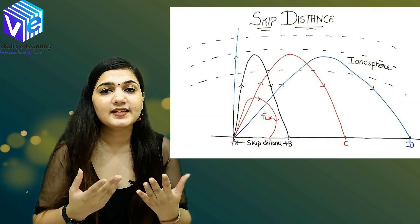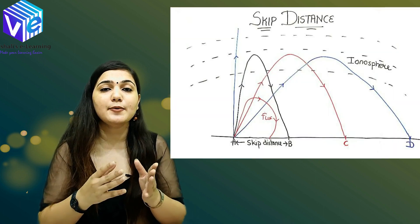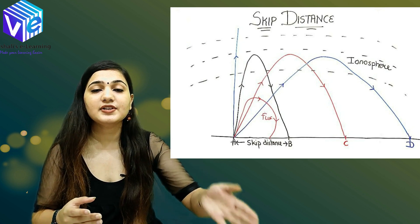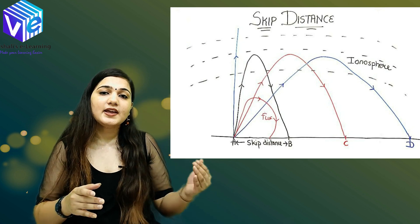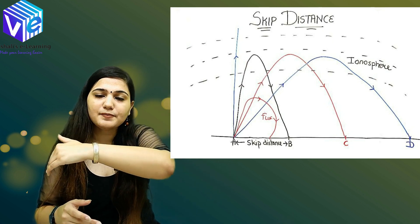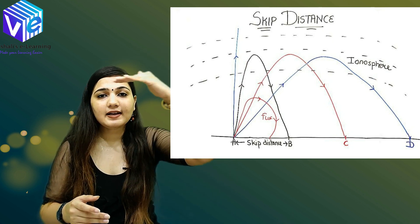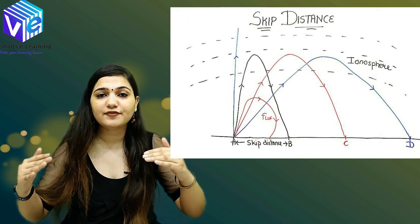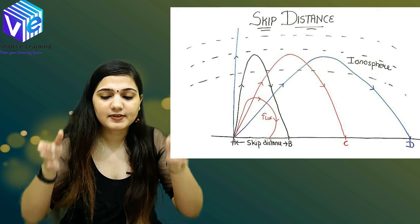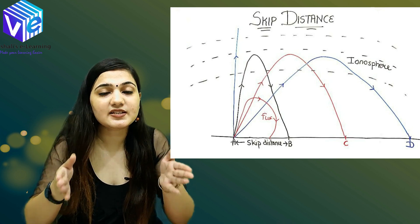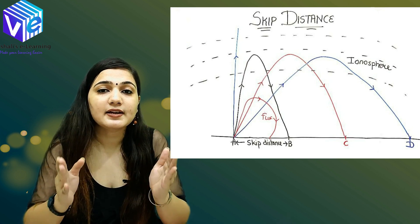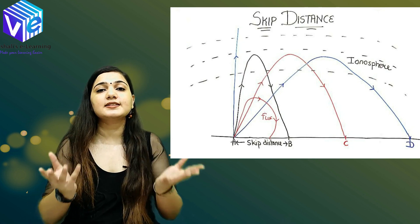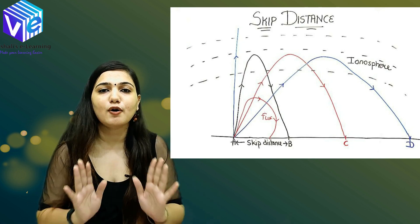Now coming to the next concept: skip distance. The skip distance is the least distance over which I can get my signal reflected back from the ionosphere. When I send a wave, it gets reflected from the ionosphere at some angle, and the minimum ground distance covered before the signal returns is called the skip distance.